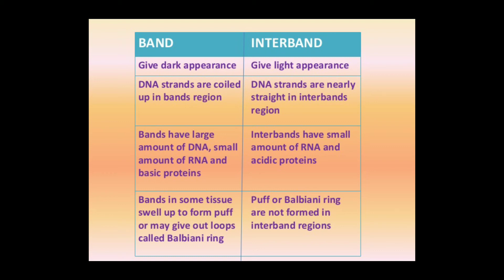Bands and inter-bands: bands are dark in appearance; inter-bands give a light appearance. DNA strands are coiled up in the band region, while DNA strands are nearly straight in the inter-band region. Bands have a large amount of DNA, small amount of RNA, and basic protein. Inter-bands have small amount of RNA and acidic protein. In some tissues, bands swell up to form puffs, or may give loops called Balbiani rings. Puffs and Balbiani rings are not formed in the inter-band region.